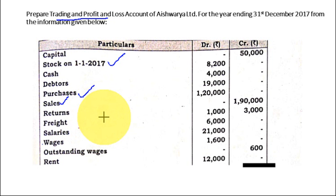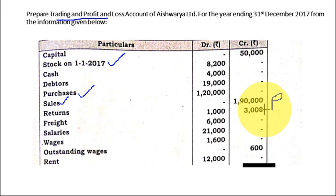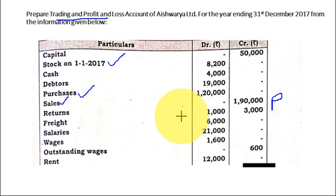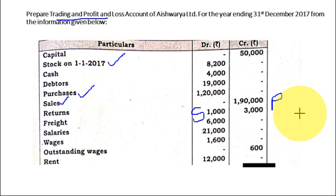To identify which return is debited and which is credited: in the case of purchase return, we are purchasing certain goods and returning them back, so goods are going out. Since goods are a real account, when they go out they should be credited — so returns of 3000 on the credit side is purchase return. For 1000 on the debit side, goods are returned to us — that is sales return. Goods coming in are debited. So 1000 is sales return and 3000 is purchase return.